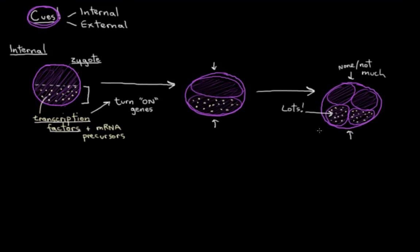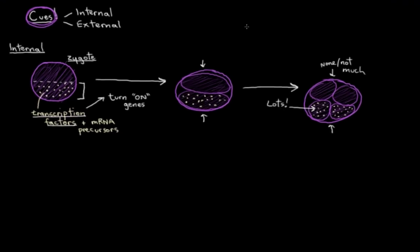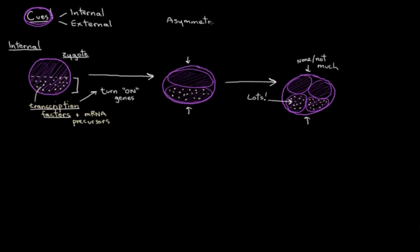So now you can imagine that different genes will get activated in these different cells, and that'll determine what each of these cells specializes into. Because now they're going to make different proteins. So this mechanism here is pretty appropriately called asymmetric segregation of cellular determinants.